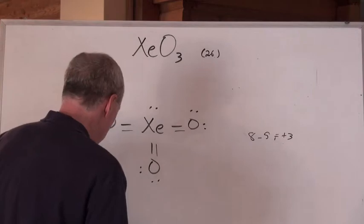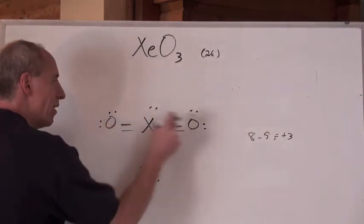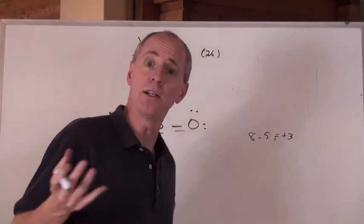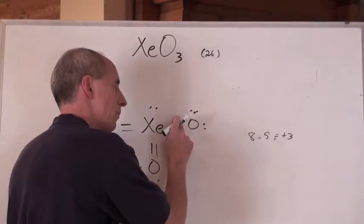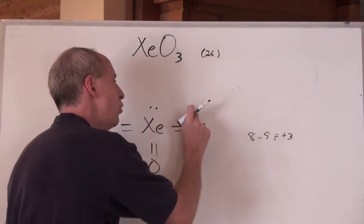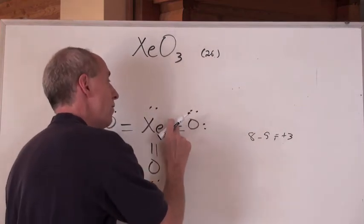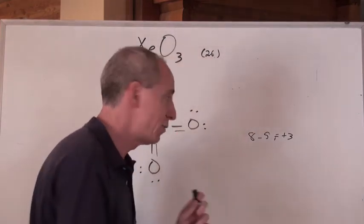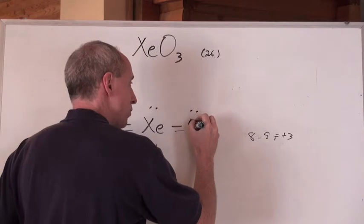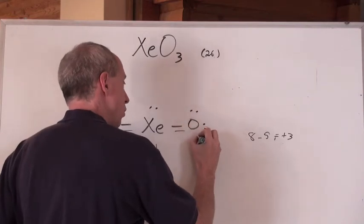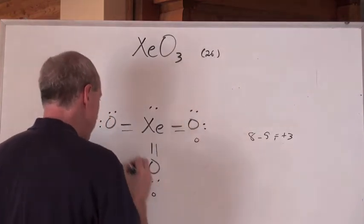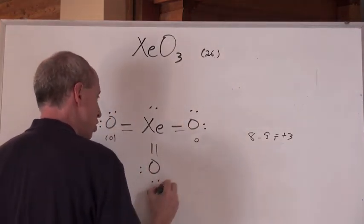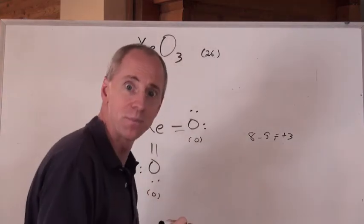Now what does that do? Every one of these oxygens — oxygen is normally in group 6. Assign it: 2, 2, 4, then 5, 6 — 1 for each bond. And that's 6 minus 6, which equals 0. So every one of these oxygens has a formal charge of 0.